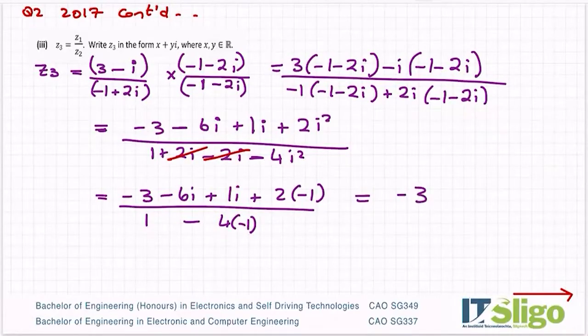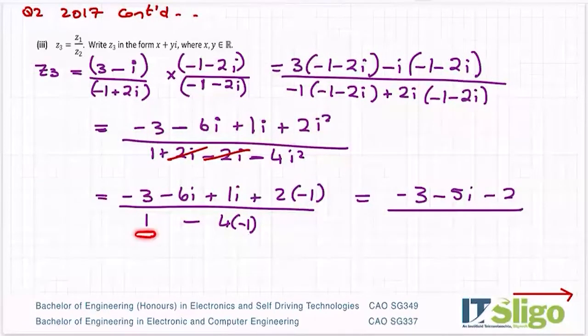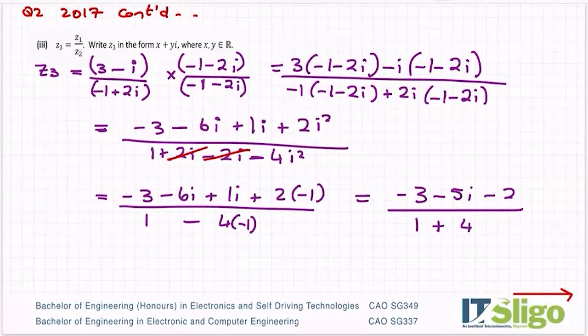That's minus three minus six i plus one i plus two times minus one over one minus four times minus one. So that's equal to minus three, minus six plus one is minus five i's, and then plus two by minus one, plus by minus is a minus, two ones are two. Then on the bottom I have one minus minus one.